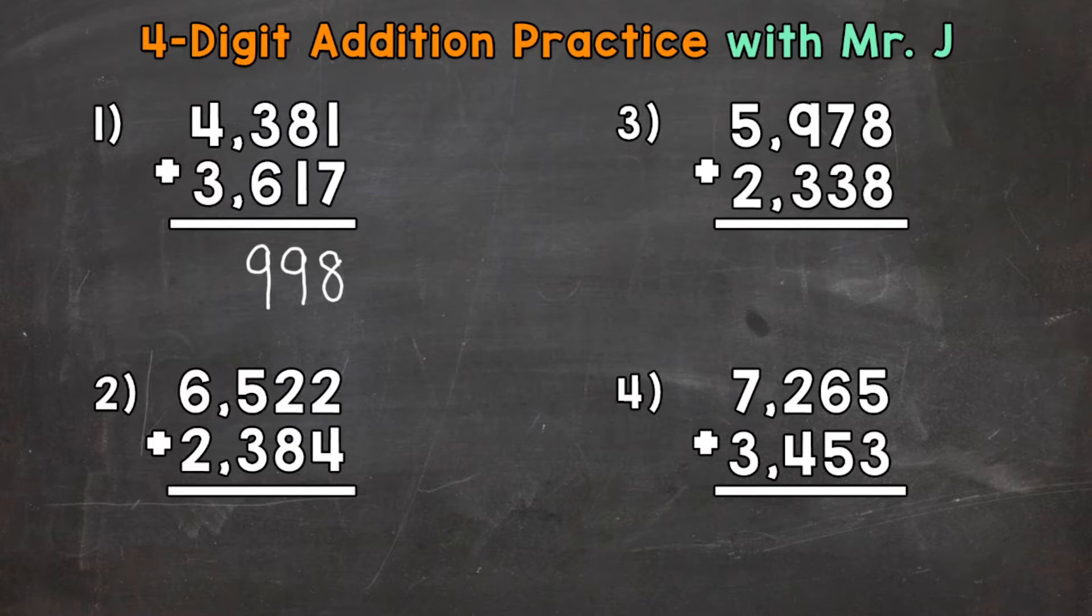And lastly, the thousands place. So 4 thousands plus 3 thousands. 4 plus 3 gives us a total of 7. So a 7 in the thousands place. And then we put our comma in the answer. And our final answer is 7,998.